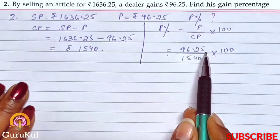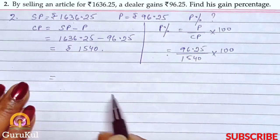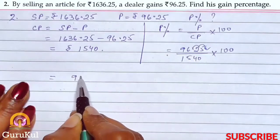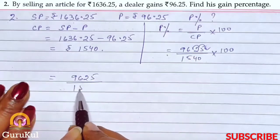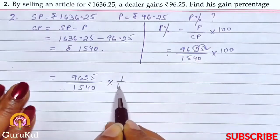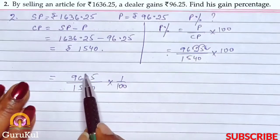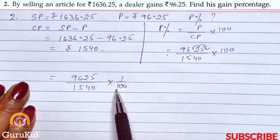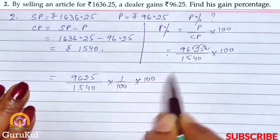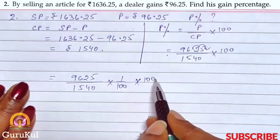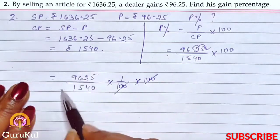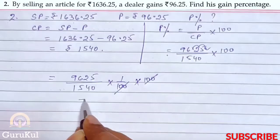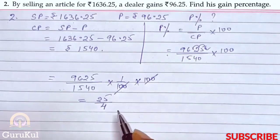Since there is a decimal in the fraction, let's reduce it. We shift two decimal places to the right, giving us 9,625 divided by 1,54,000, into 100. But since we shifted two decimal places, we divide by 100 in the denominator. The two hundreds cancel out, and after reducing the fraction we get 25 divided by 4 percent.